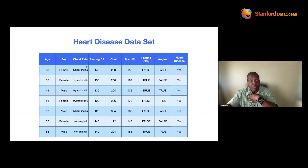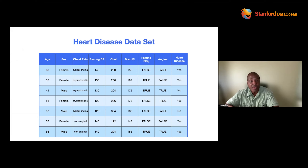We have the sex of the patient, the type of chest pain or angina the patient has, their resting blood pressure (diastolic pressure), their total cholesterol, their maximum heart rate achieved, whether they have high fasting blood sugar, whether they have exercise-induced angina — do they get chest pain from exercising — and then the presence or absence of heart disease. That's your dataset.